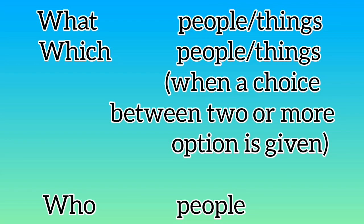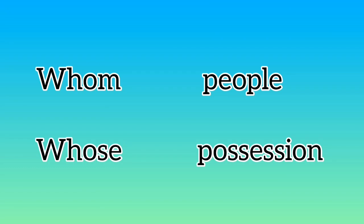In short: 'what' is used to ask questions about people or things. 'Which' is used to ask questions about people or things when a choice between two or more options is given. 'Who' is used to ask questions about people. 'Whom' is used for reference to people. And 'whose' is used to ask questions about possession.